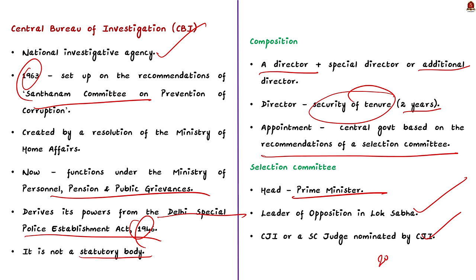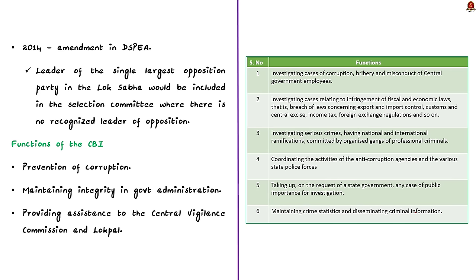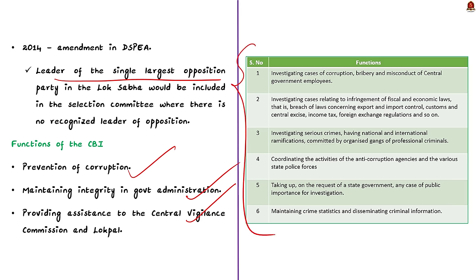In 2014, the government made amendments to the Delhi Special Police Establishment Act, bringing changes in the composition of the selection committee. The amendment states that when there is no recognized Leader of Opposition in the Lok Sabha, the leader of the single largest opposition party in the Lok Sabha would form part of the selection committee. The CBI plays an important role in prevention of corruption and maintaining integrity in government administration, and also provides assistance to the Central Vigilance Commission and Lok Pal. Some other functions of CBI are displayed here.